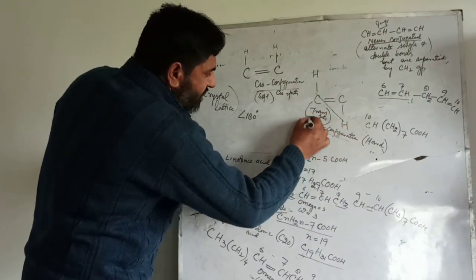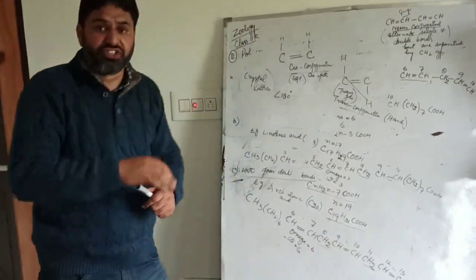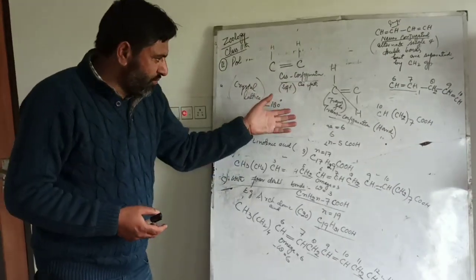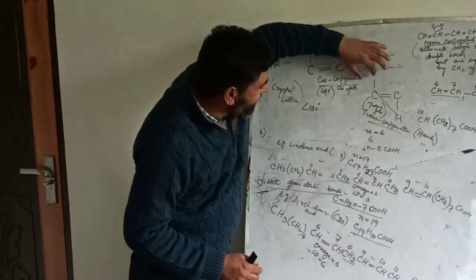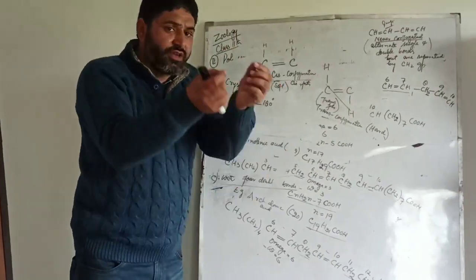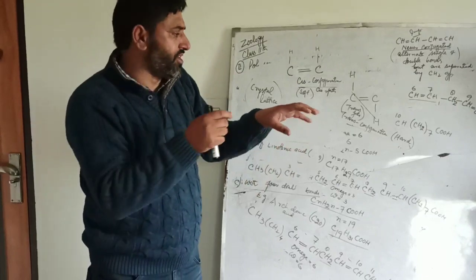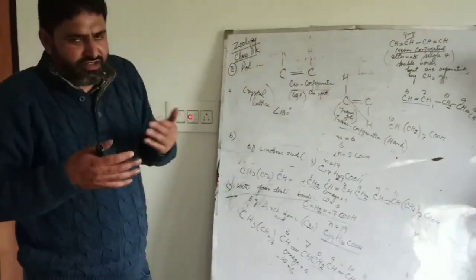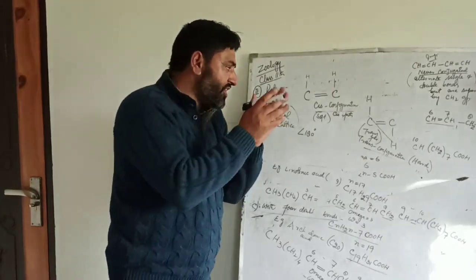Trans fats are banned in the US - their use is banned in restaurants. When you go to buy chips or other food substances in the market, you see mentioned 'no trans fats.' These trans fats are hard because the hydrogen atoms are on either side of the two carbon atoms, forming an angle of 180 degrees, fitting into the crystal lattice - making them hard. If such fats are consumed, they can be deposited in blood vessels, increase blood pressure, and have harmful effects on the body. That is why trans fats are banned in the US.